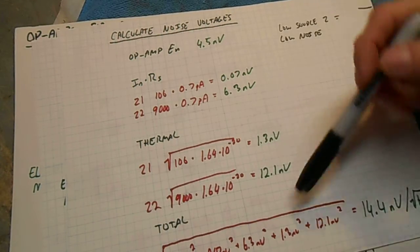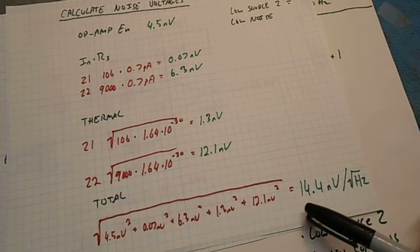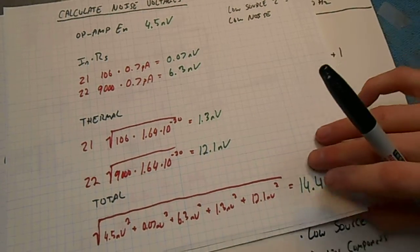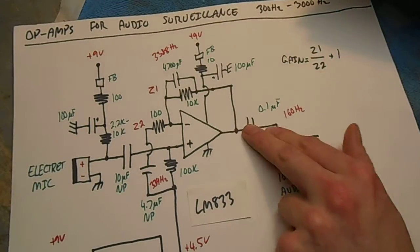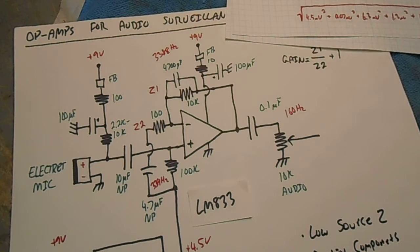Punch all these into that quadrature equation, and we get a total of 14.4 nanovolts per root hertz. So this op amp adds 14.4 nanovolts per root hertz noise to any incoming signal.